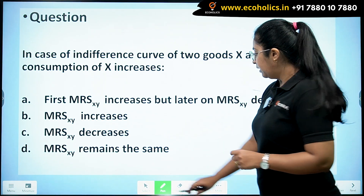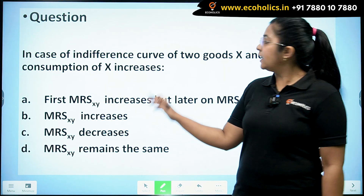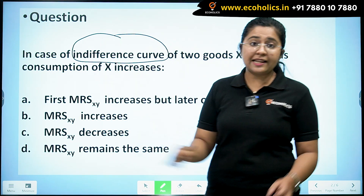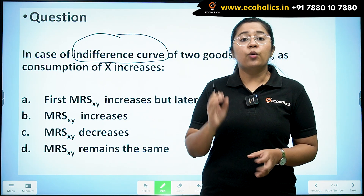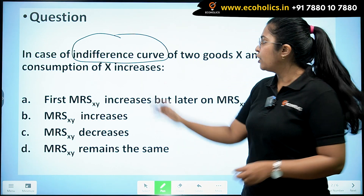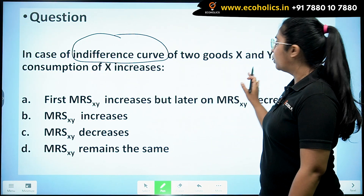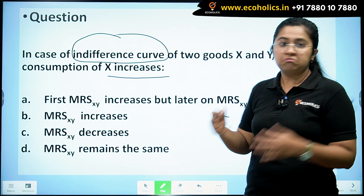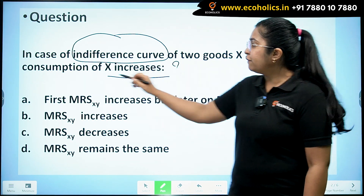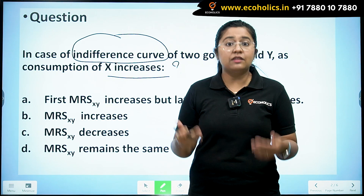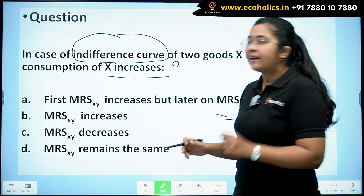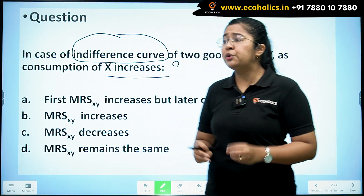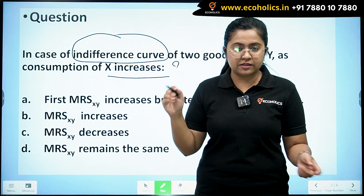The question we are looking at is from the microeconomics module of the UGC NET Economics paper. If you read the question, it talks from the perspective of indifference curve. So first let's read the question and then analyze what exactly has been asked. In case of the indifference curve of two goods X and Y, as the consumption of commodity X increases, what happens? Now when we look at a question, we have to look from a broader perspective.